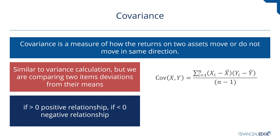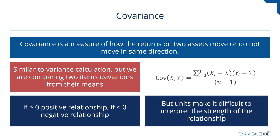How do we interpret the covariance statistic? If it's greater than zero, it means it's a positive relationship — assets or investments tend to move together. If it's less than zero or negative, it's a negative relationship and they tend to move in opposite directions. The downside of covariance is that units make it very difficult to interpret beyond that. The strength of the relationship and being able to compare covariances across assets is a bit difficult.